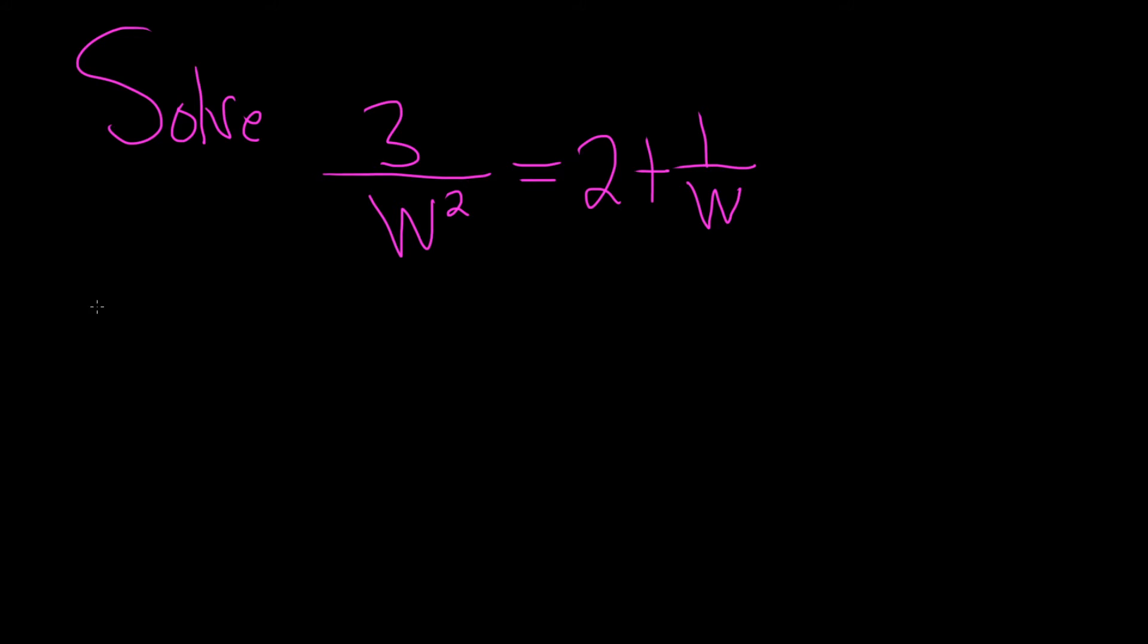A good first step in solving rational equations is to figure out what you can multiply both sides by in order to get rid of the fractions. If you multiply by W, you'll just get rid of the W over here and you'll still have the W squared over here on the left. But if you multiply by W squared, you'll be able to get rid of all of the W's. So let's go ahead and do that. Let's multiply both sides by W squared.